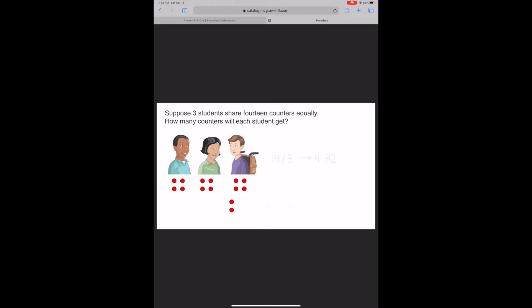Look at this number model for 14 counters shared equally by three students. In the solution, the quotient, four, is the number of counters each student gets. The remainder, two, is the number of counters left over. In this case, since you cannot split the remaining counters among three people, ignore the remainder. Each student will get four counters.